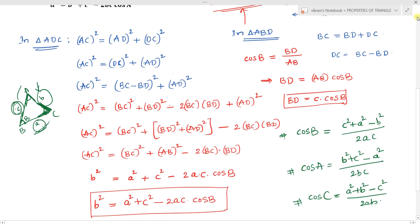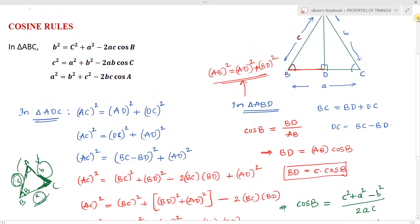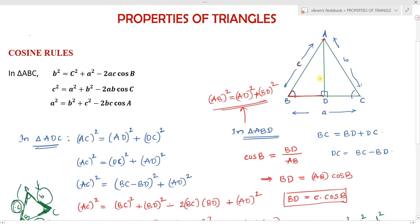By considering another altitude — a perpendicular from vertex C, or from vertex B — we can find the other cosine rules. There is also an alternative method to derive these rules.